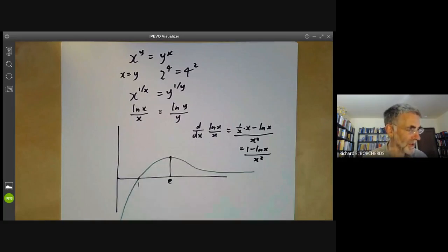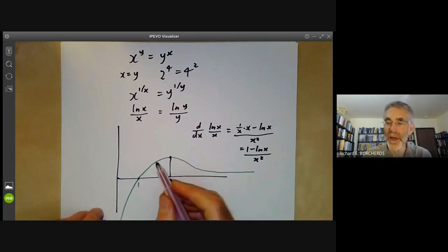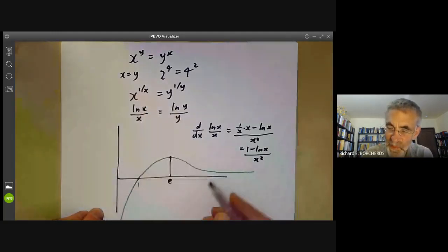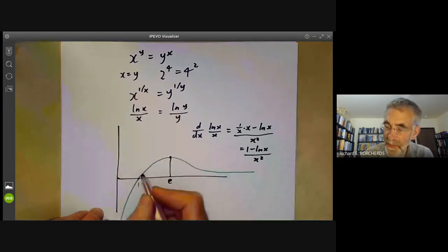So that gives us a good idea of what this function looks like. Now we want to find points x and y that have the same value of this function. Well, obviously if x and y are the same, then they have the same value. So what about when x and y are not the same? Well, we could take x to be here and y to be up there, for example.